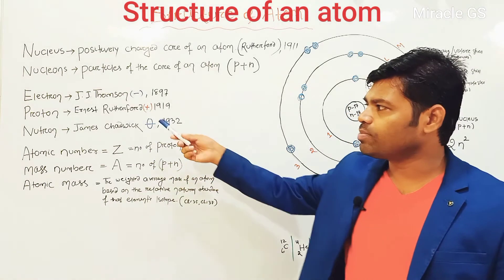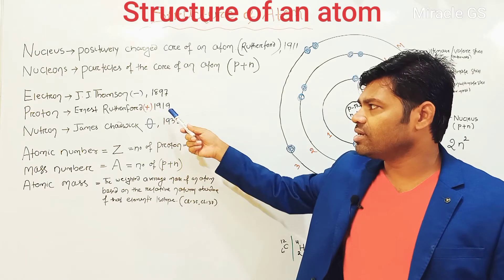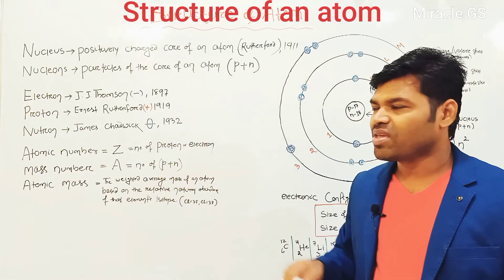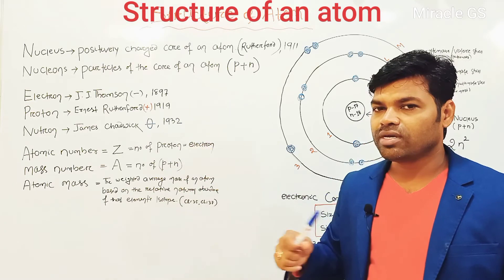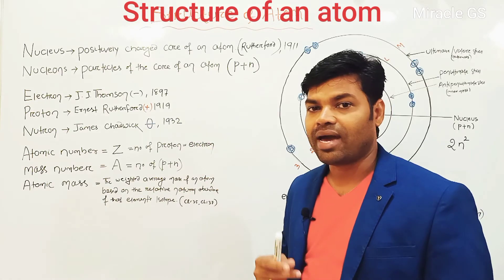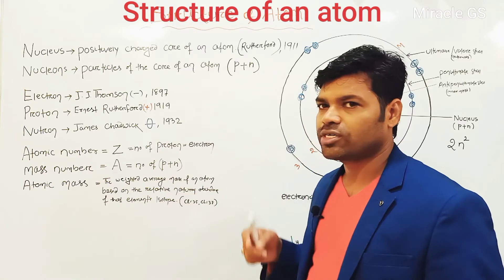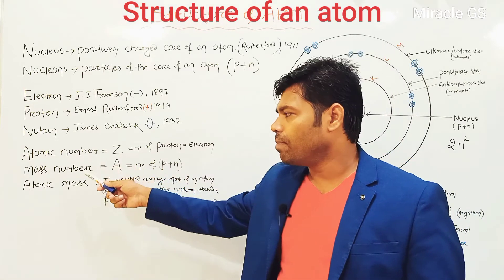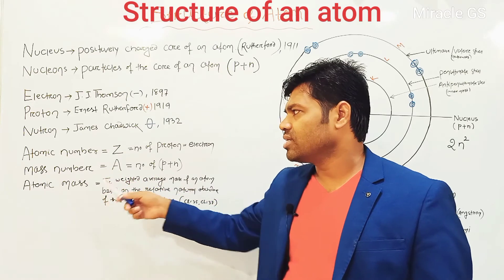Many people say that proton was discovered by Goldstein, but actually it was discovered by Rutherford. So let us understand another three concepts related to the structure of atom: atomic number, mass number and atomic mass. Atomic number is symbolized as Z, and mass number is symbolized as A.